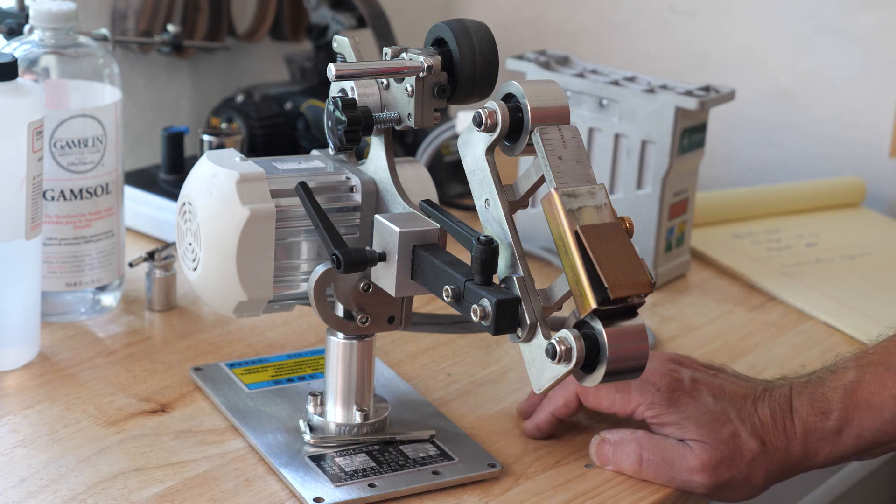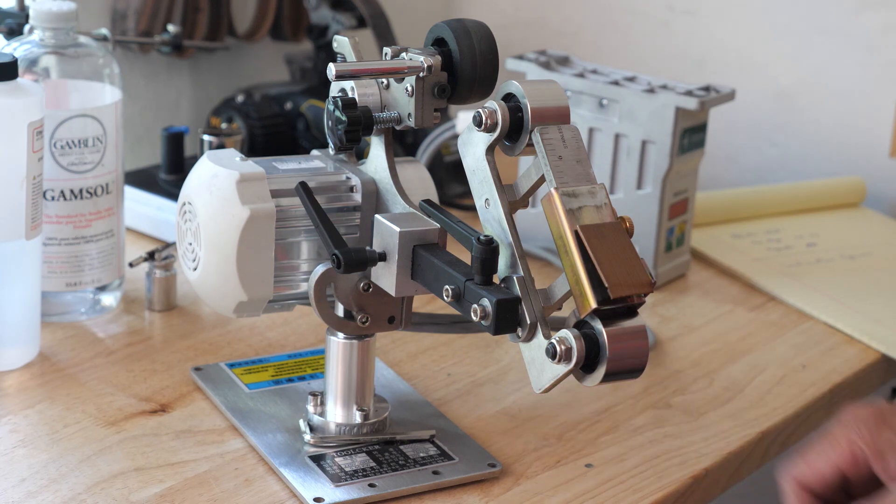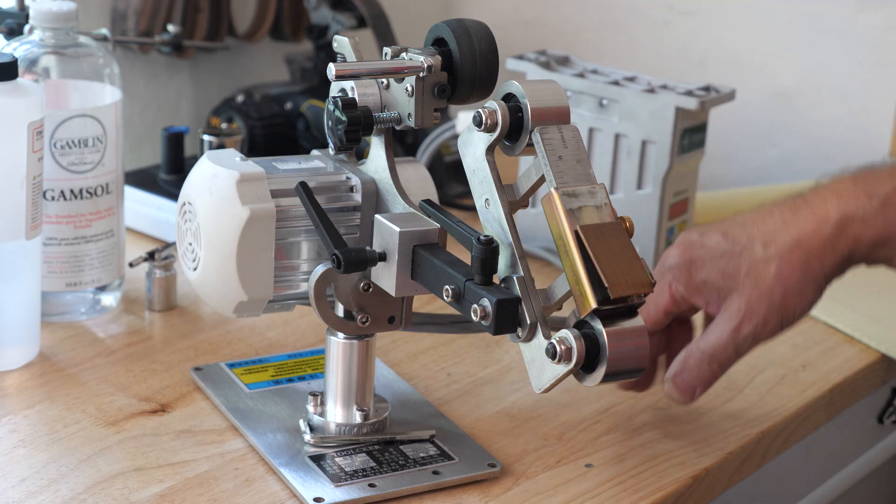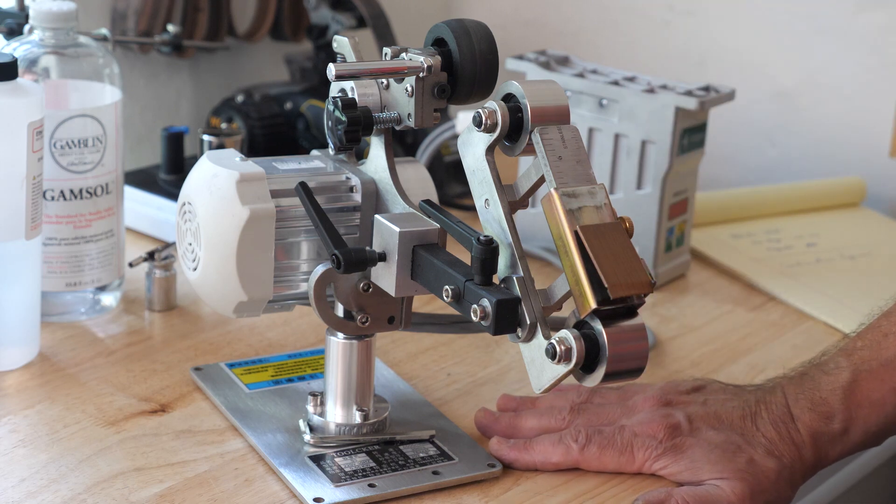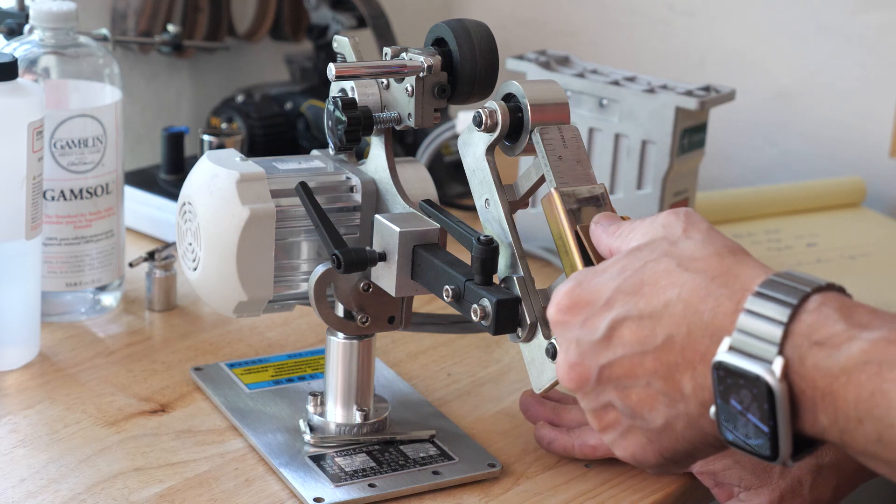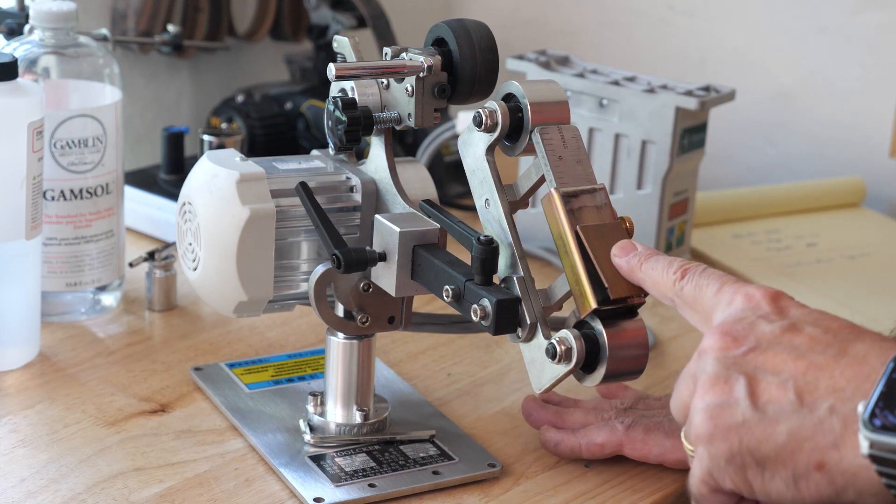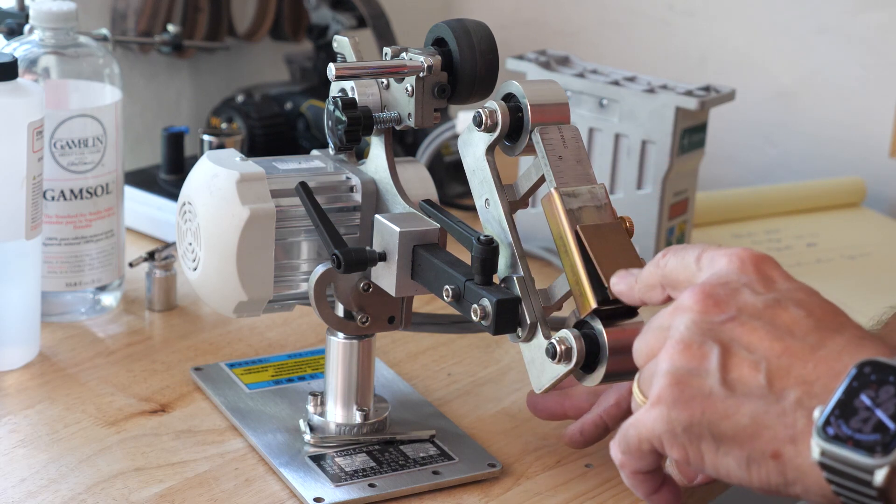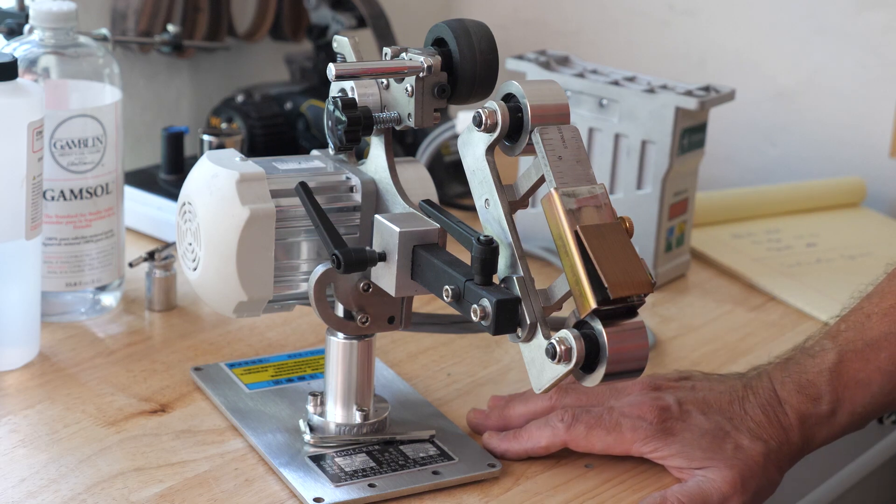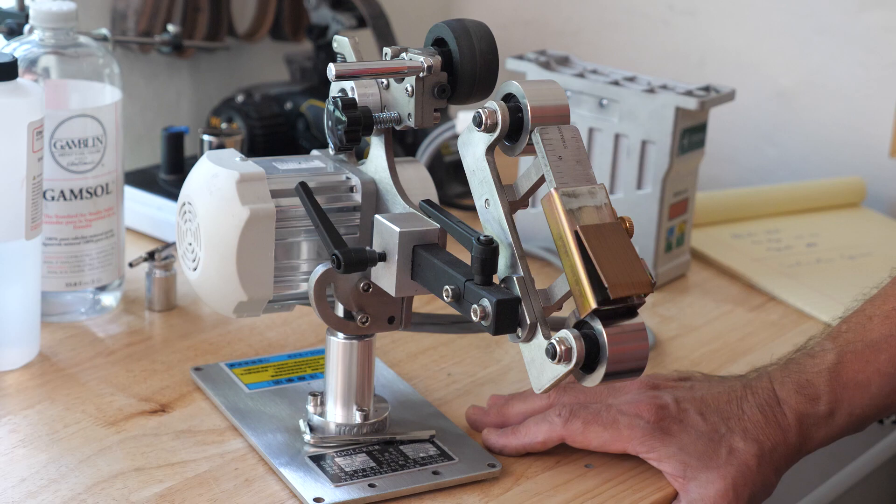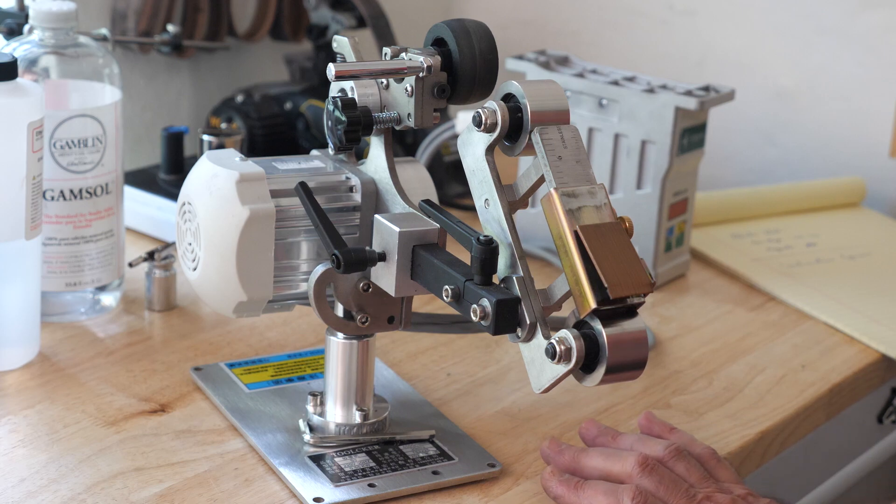For knife sharpening, I've been meaning to try out a 1x30 in addition to everything else that I have. And the way I wanted to do it was using this angle guide, which as far as I know, I think Cliff Curry, who is a knife sharpener in Hawaii, I think he's the one who sort of came up with this idea.